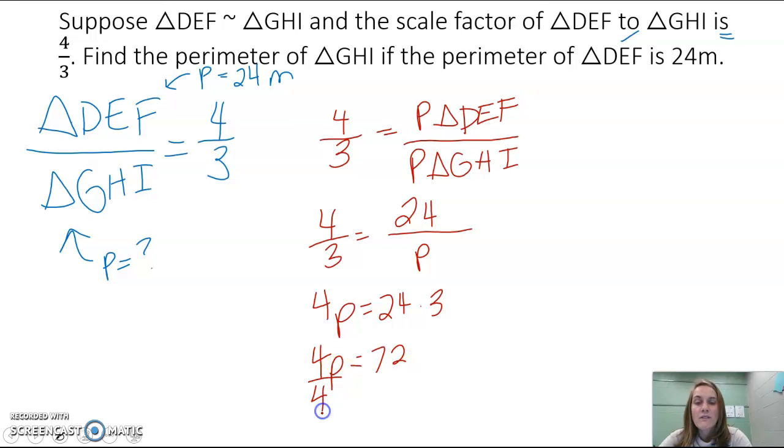Divide both sides by 4 to solve for P because 4 is multiplying with P. 72 divided by 4 is 18, so P equals 18.